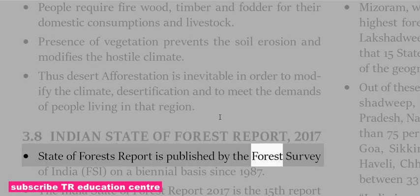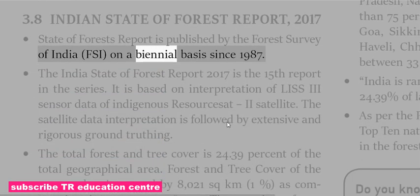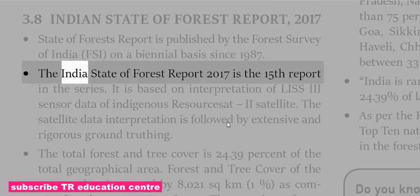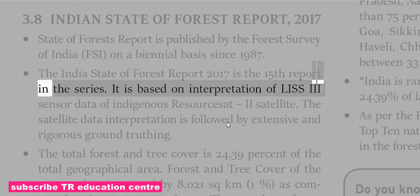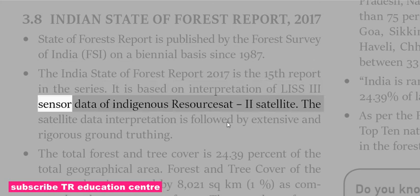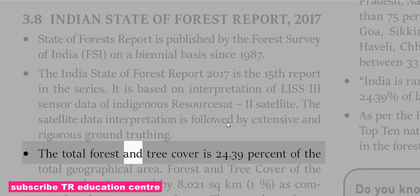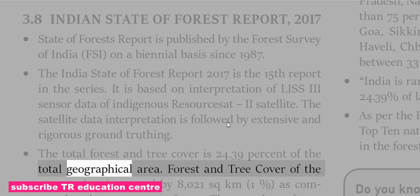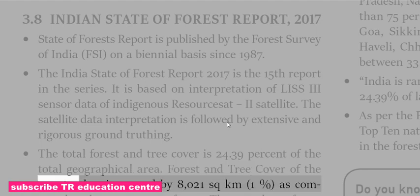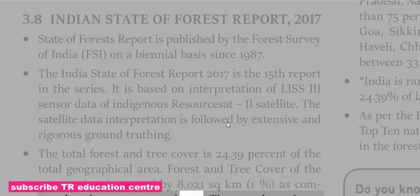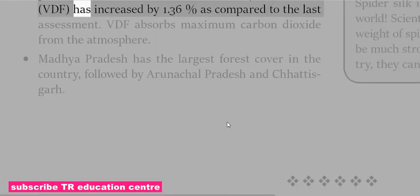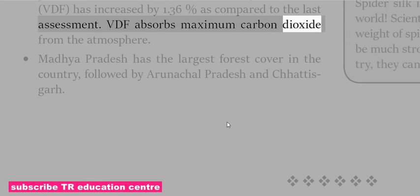The India State of Forest Report is published by the Forest Survey of India (FSI) on a biennial basis since 1987. The India State of Forest Report 2017 is the 15th report in the series, based on interpretation of LISS-3 sensor data from indigenous resources satellite. The total forest and tree cover is 24.39% of the total geographical area, an increase of 8,021 sq km (1%) compared to the 2015 assessment. Very Dense Forest (VDF) has increased by 1.36% compared to the last assessment and absorbs maximum carbon dioxide from the atmosphere.